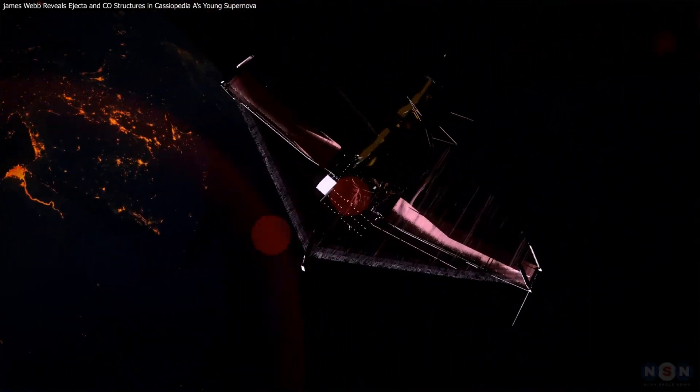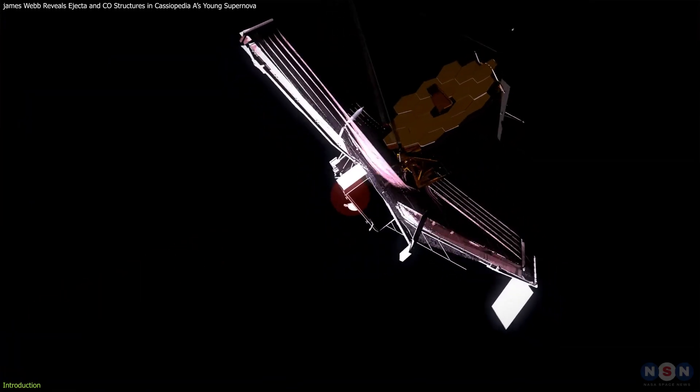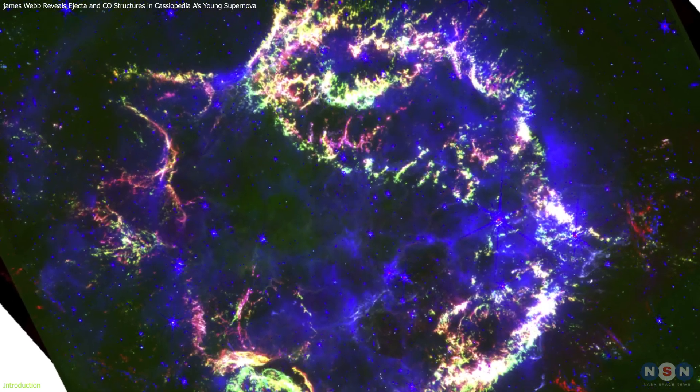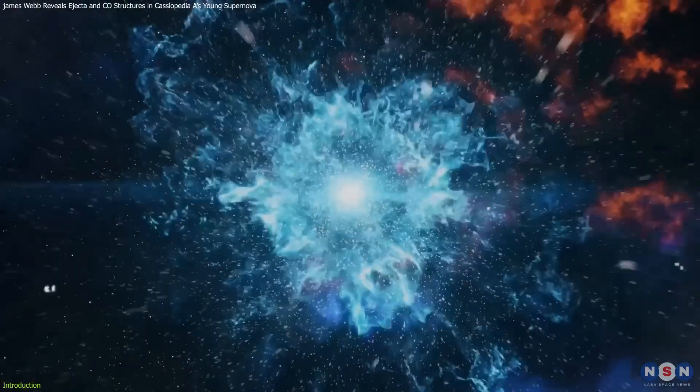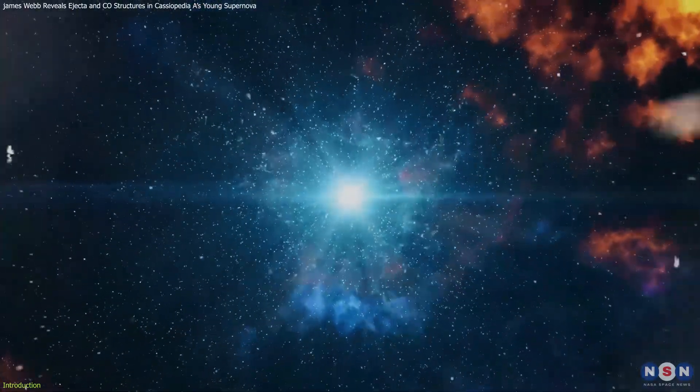Today we're unlocking the secrets of the cosmos with the James Webb Space Telescope as it reveals stunning observations of Cassiopeia A, the youngest known core-collapse supernova remnant in our galaxy.